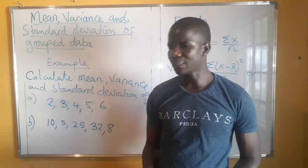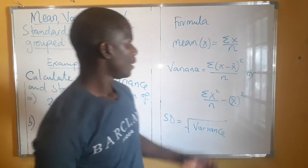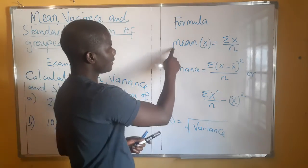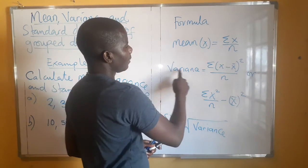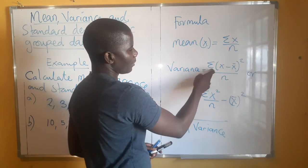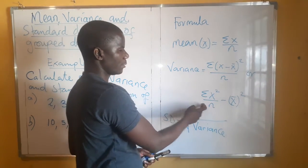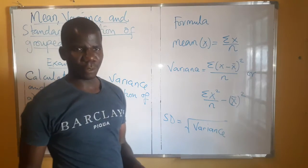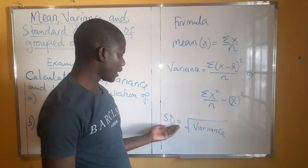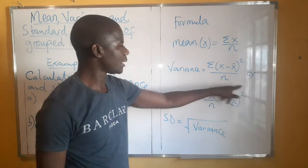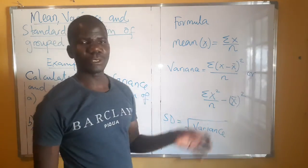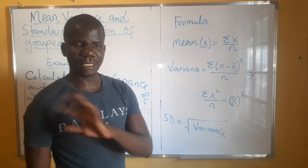So without wasting time, the formulas are listed here — the formula for finding the mean of ungrouped data, the variance of ungrouped data. We can either use this formula or this one, and we'll try both to see if we get the same answer. For standard deviation, we just take the square root of whatever we get as variance.